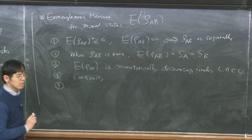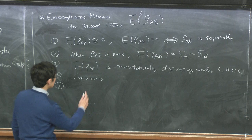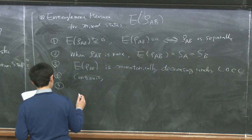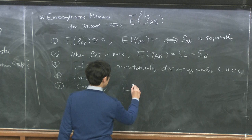I'm not going to write the continuity property explicitly, but for example, von Neumann entropy satisfies continuity, while we know linear entropy does not satisfy this property. So at that point, von Neumann entropy is something very good compared with linear entropy.